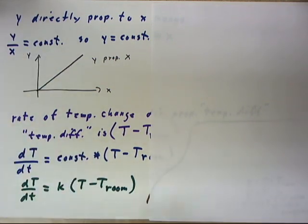So we see that if the rate of temperature change is proportional to what we call the temperature difference, we can write this equation which is first order linear but non-homogeneous.